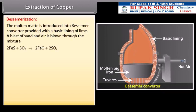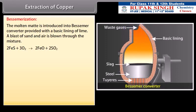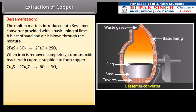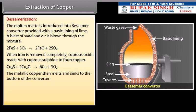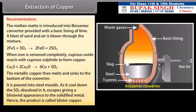Bessemerization: The molten mate is now introduced into Bessemer converter provided with a basic lining of lime. The blast of sand and air is blown through the mixture. FeO is removed as FeSiO3. When iron is removed completely, cuprous oxide reacts with cuprous sulphide to form copper. The metallic copper then melts and sinks to the bottom of the converter. It is poured into steel moulds. As it cools down, the SO2 dissolved in it escapes giving a blistered appearance to the solidified metal. Hence, the product is called blister copper. It contains about 98% copper. Blister copper is refined electrolytically.